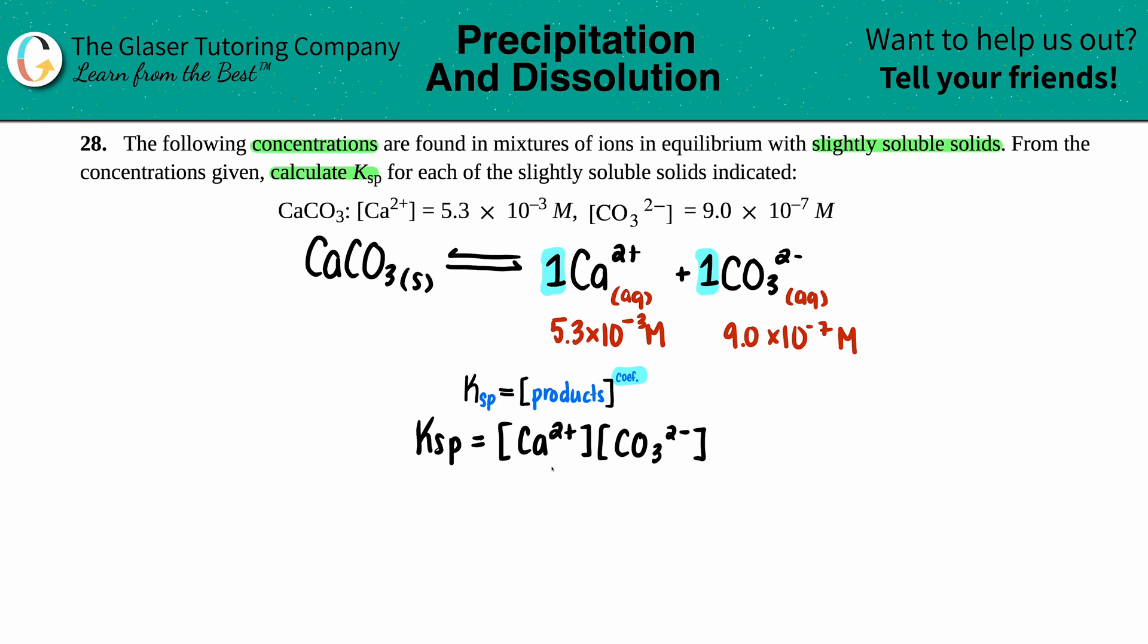So the calcium we know is 5.3×10⁻³, and the carbonate is 9.0×10⁻⁷. Right from there we can solve for the Ksp, so let's go for it.